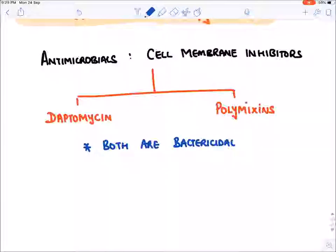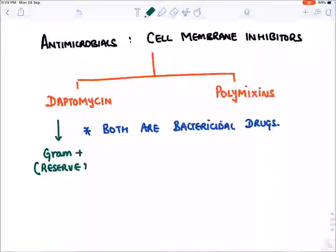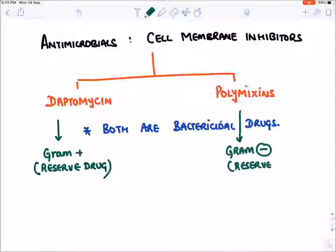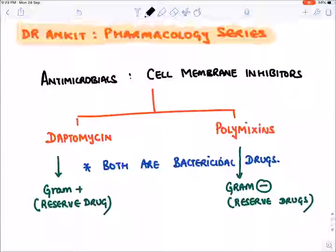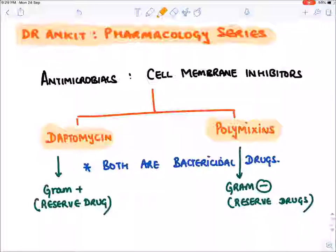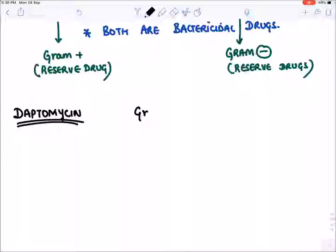Daptomycin is given mainly for all gram positive bacteria as a reserve drug, and polymyxin is given for gram negative bacteria as a reserve drug — they are used as a last resort. The group of daptomycin is known as lipopeptides.